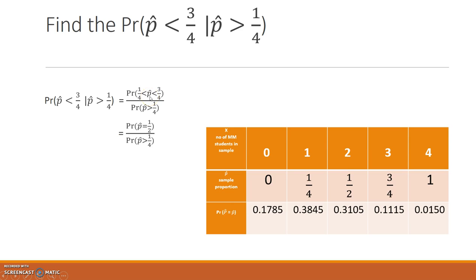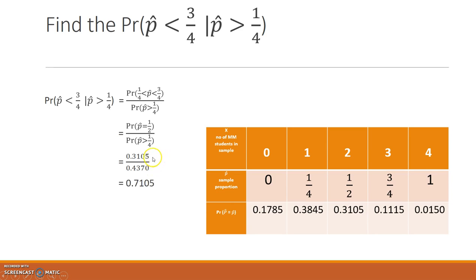Looking at where P-hat is between 1/4 and 3/4 in the table, the only value strictly between those two is P-hat = 1/2. So the numerator is P(P-hat = 1/2) = 0.3105, and the denominator is P(P-hat > 1/4) = 0.3105 + 0.1115 + 0.0150 = 0.4370. Dividing 0.3105 by 0.4370 gives 0.7105, which is the final answer.